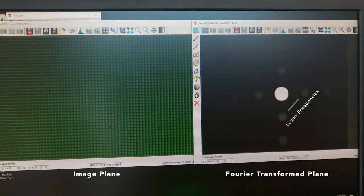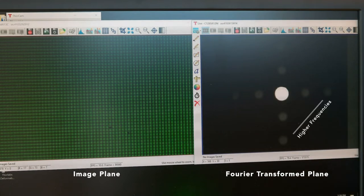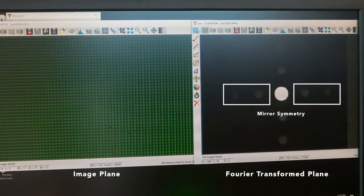Lower frequencies are closer to the center of the Fourier plane, at the origin. Higher frequencies are further from the origin. Why are there two dots instead of just one? Because power spectra have mirror symmetry.